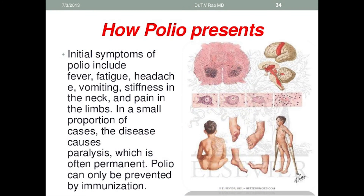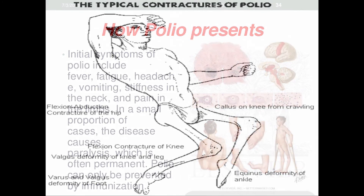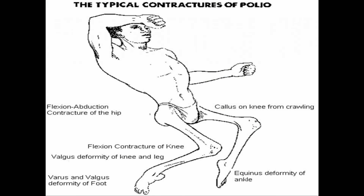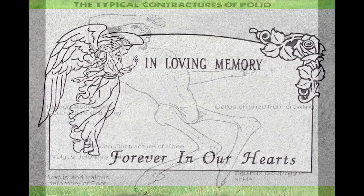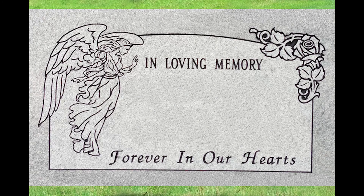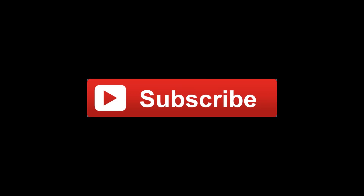The main symptoms of polio are fever, fatigue, headache, vomiting, stiffness of the neck, and pain in the arms and legs. There is, however, a one-in-200 chance that the infection leads to irreversible paralysis, usually in the legs. Among those paralyzed, five to ten percent die due to their breathing muscles becoming immobilized.